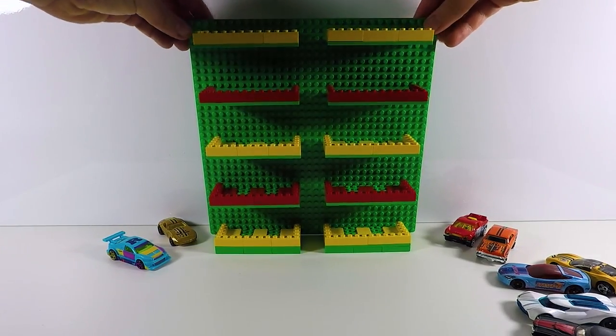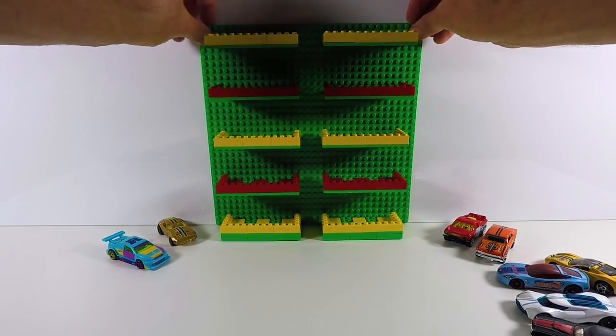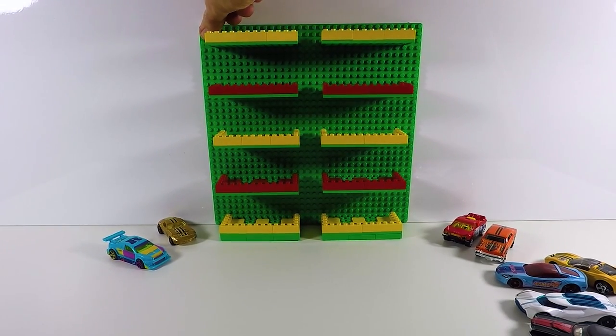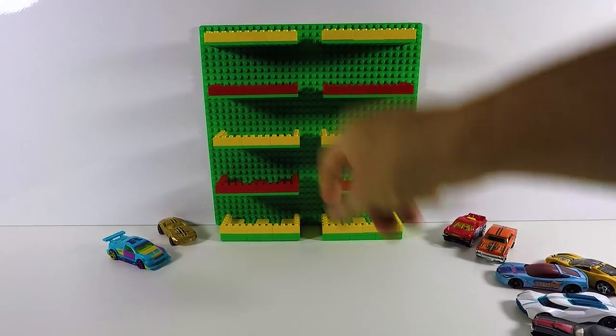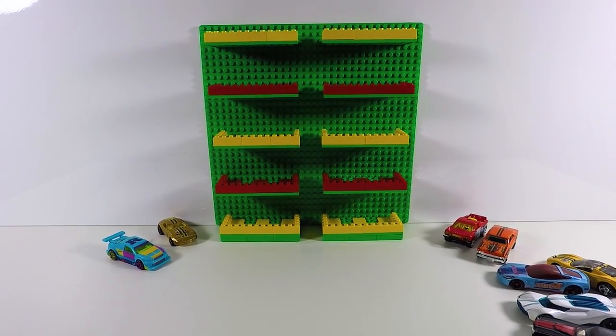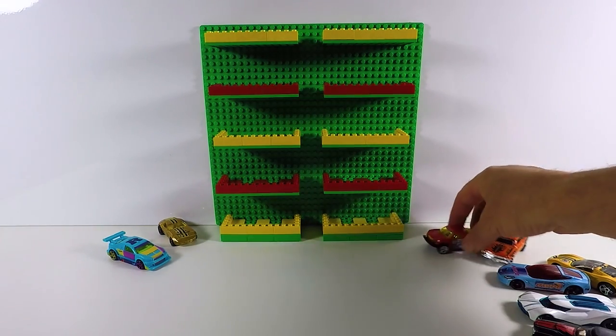Okay, so we just put a bit of the sticky tack at the back and then we can just press that up against the wall and that'll just stop them from wobbling around. There's a lot of support down here as well. So that's as easy as it is to make your own Lego Hot Wheels stand.